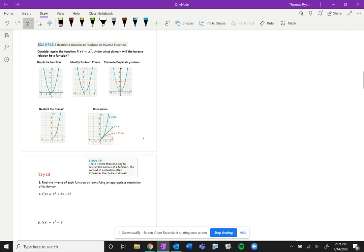So example three follows directly from what you just did in example two, but now we're just going to talk about if you want to produce an inverse function. This is the keyword: if you want to produce a function, you're going to have to restrict the domain. So we want to restrict domain not just for any purpose, but to intentionally produce a function.